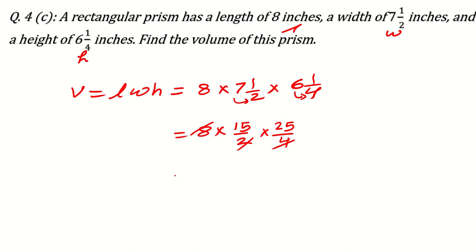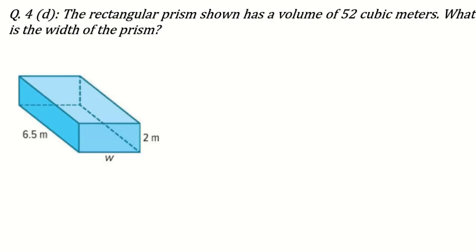Now we calculate 15 multiplied by 25: 15 times 5 is 75, carry 7; 15 times 2 is 30 plus 7 is 37. So the result is 375 cubic inches. Note: if you cannot cancel, you multiply the numerators and then divide by the denominators — the calculation will be longer.